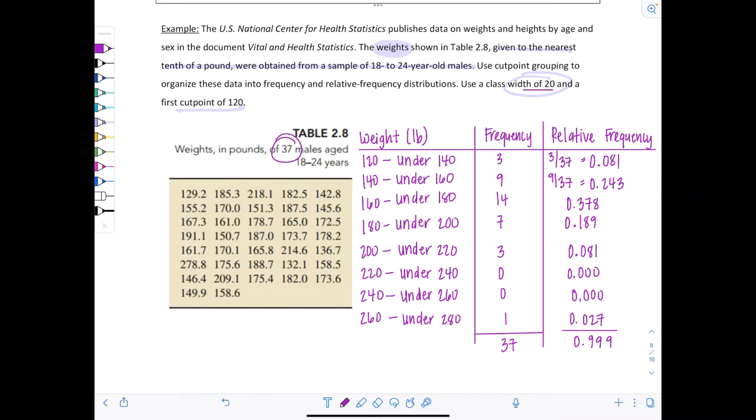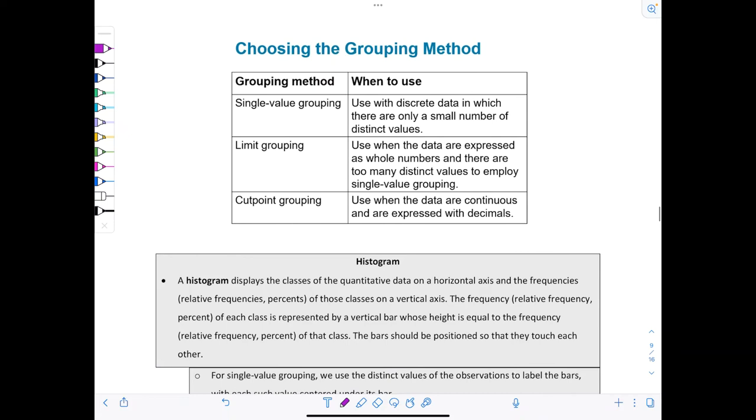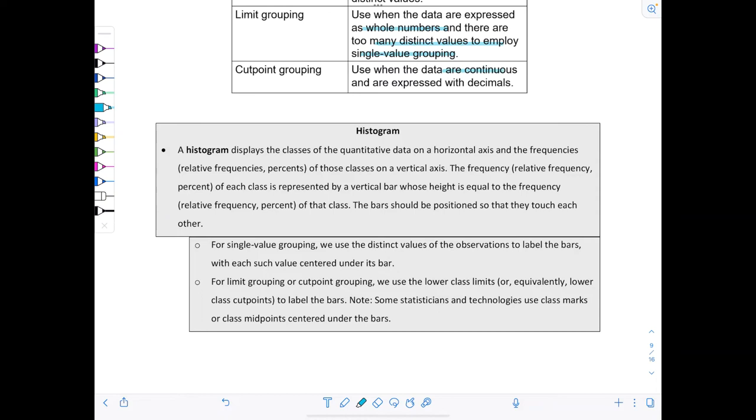Just to recap, we went over three different grouping methods for data. The first was single value grouping - use this when you have discrete data that you count and there's only a small number of distinct values. Limit grouping - use that when data is expressed as whole numbers and there's too many distinct values to employ single value grouping. And cut point grouping - use this when the data is continuous and expressed with decimals.